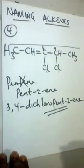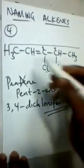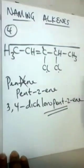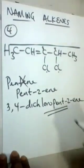To name alkenes, identify the longest continuous chain, locate the double bond, and number the carbon atoms to give the double bond the lowest possible number.